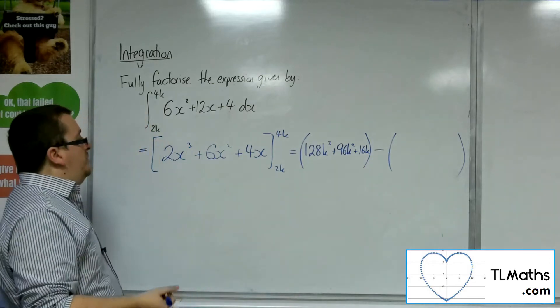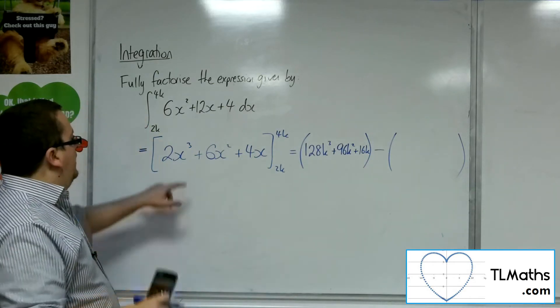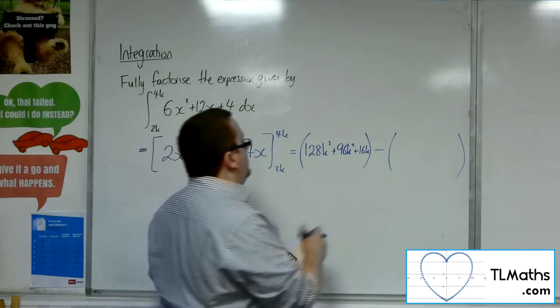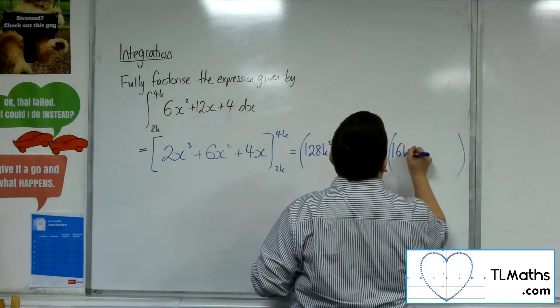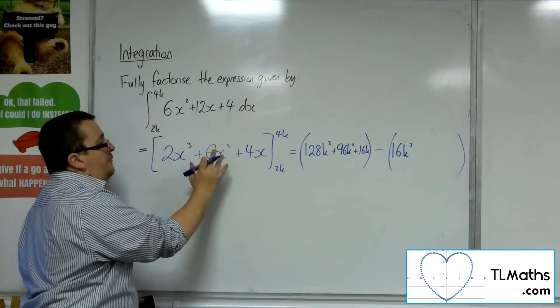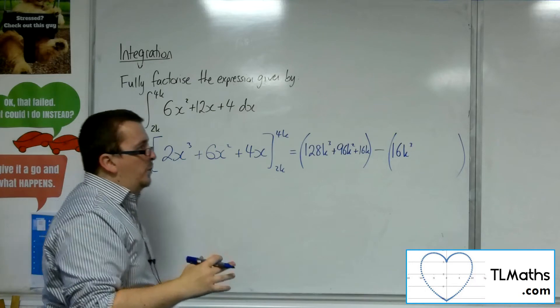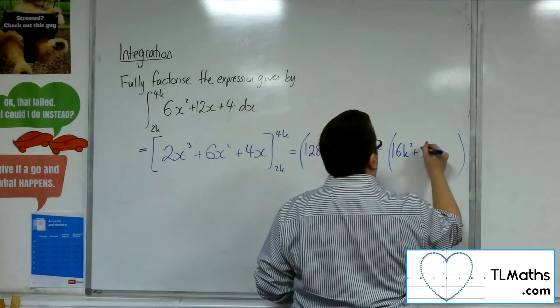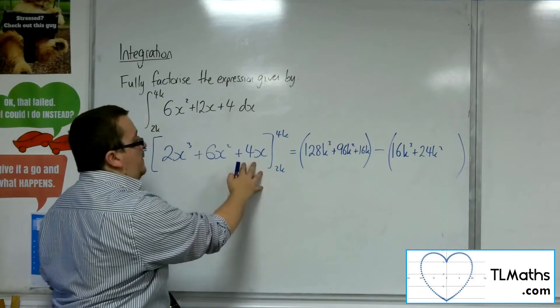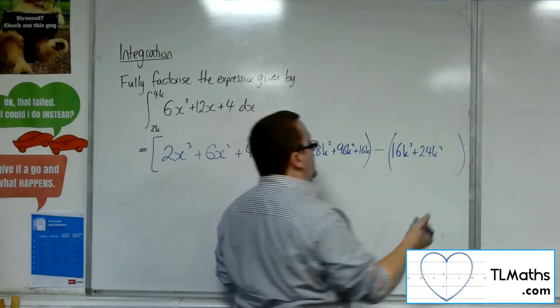Now substitute in 2k. So we're going to have 2k cubed, which is 8k cubed, doubled to 16k cubed. Substitute the 2k in here, we're going to get 4k squared. 6 lots of 4k squared is 24k squared. And substitute the 2k into here, we're going to get 4 lots of 2k, so 8k.